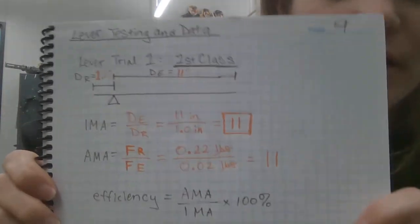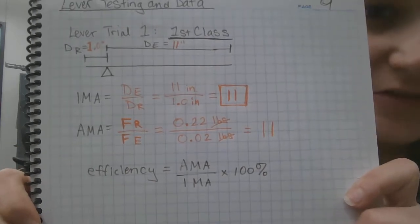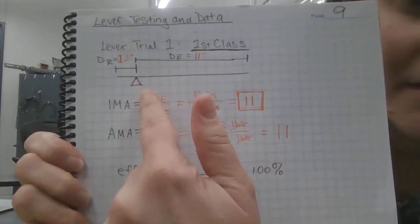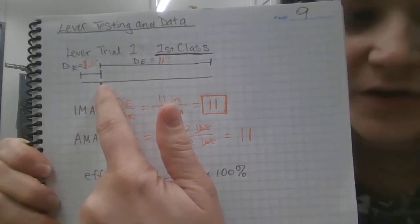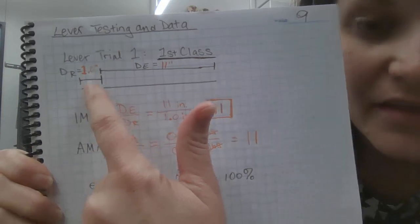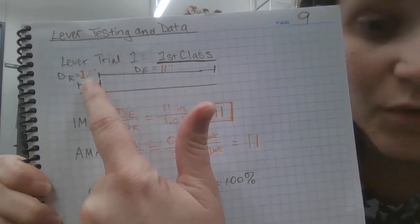Alright, so here's for the first lever. I did a sketch so you can see the fulcrum, that just represents where that axle is. And then this side of the lever, that actually was precisely one inch.